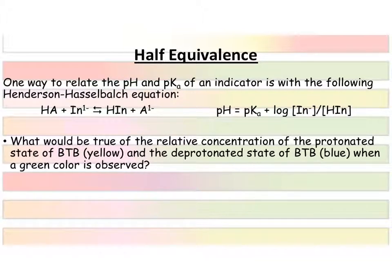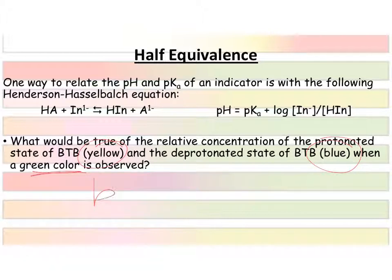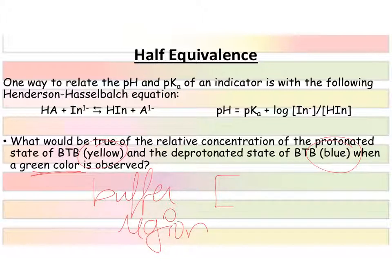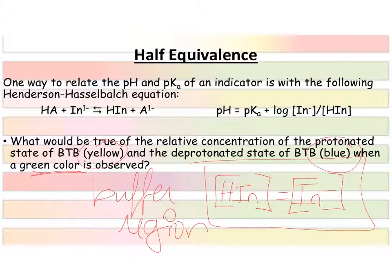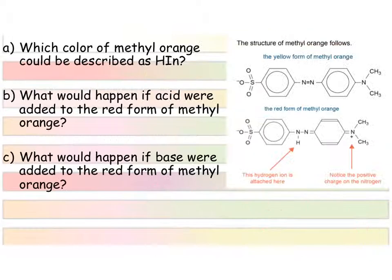We can use Henderson-Hasselbalch to reason about what's going on with indicators. For bromothymol blue, when a green color is observed — and green is the mixture of yellow and blue — that tells us we are in the buffer region of the indicator. The concentration of the protonated HIn is equivalent to In⁻. We're basically at half equivalents at that point, so within plus or minus one pH unit of the pKa in the buffer region.